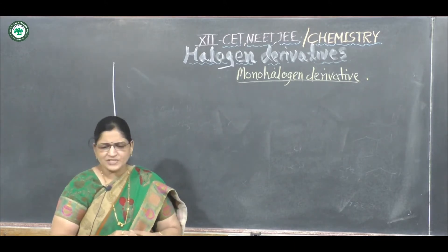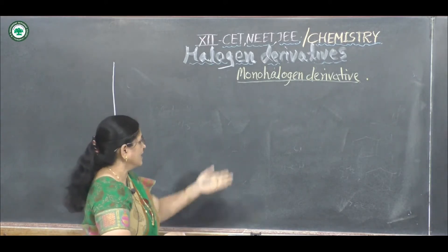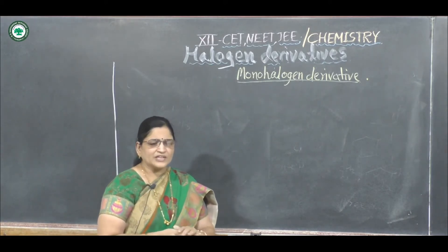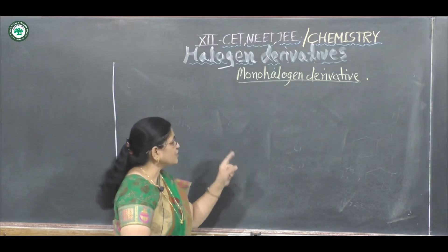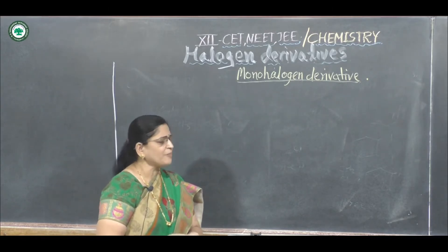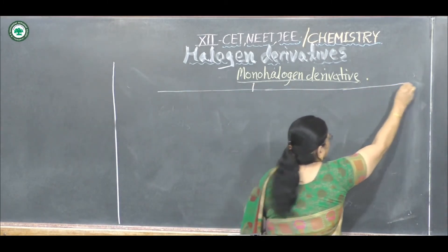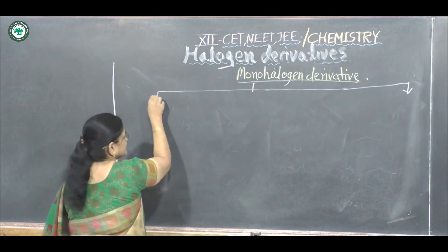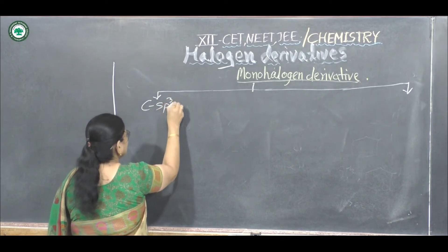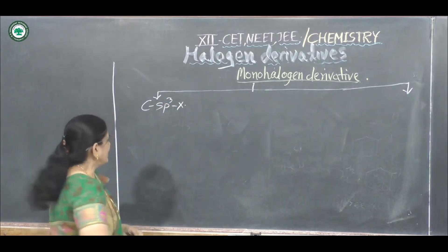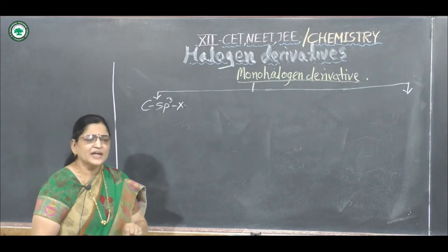These monohalogen derivatives are classified on the basis of type of hybridization and position of halogen atom. On this basis, they are mainly classified into three classes: first, compounds containing sp3-X, meaning the halogen atom is attached to an sp3 type of hybridized carbon atom.